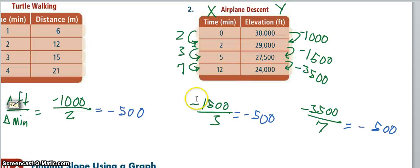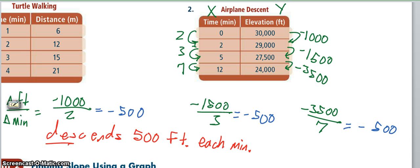Alright, so when we set up each of these, so I grab the negative 1,000, put it over two, do the same with 1,500 over three, and the same with the negative 3,500 over seven. And we do in fact get all of them to equal negative 500, which means that really that's saying that it descends 500 feet per minute. So that's pretty fast if you ask me. So we can say descends 500 feet each minute, because D means to go down. So that takes care of our negative right here.